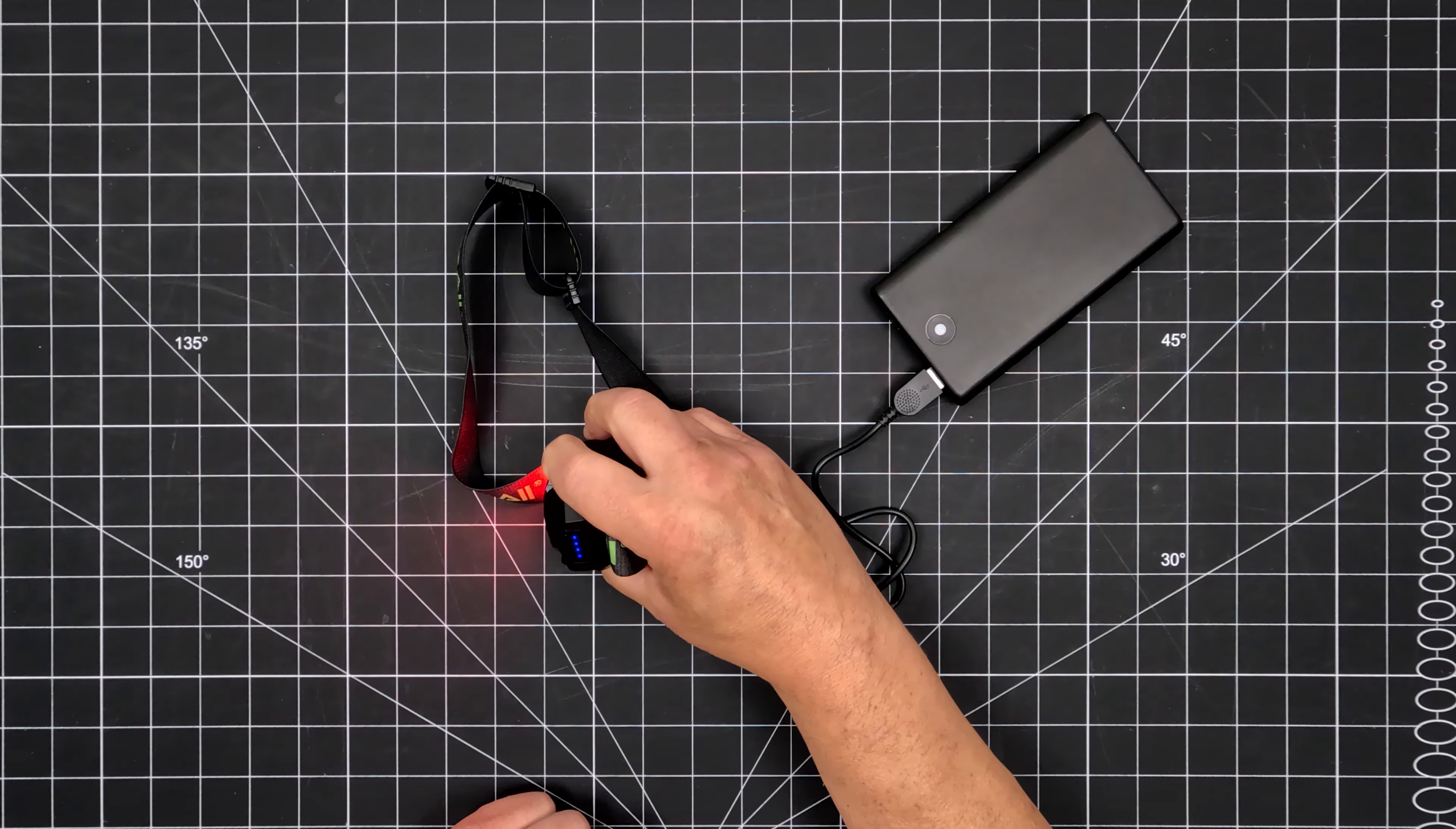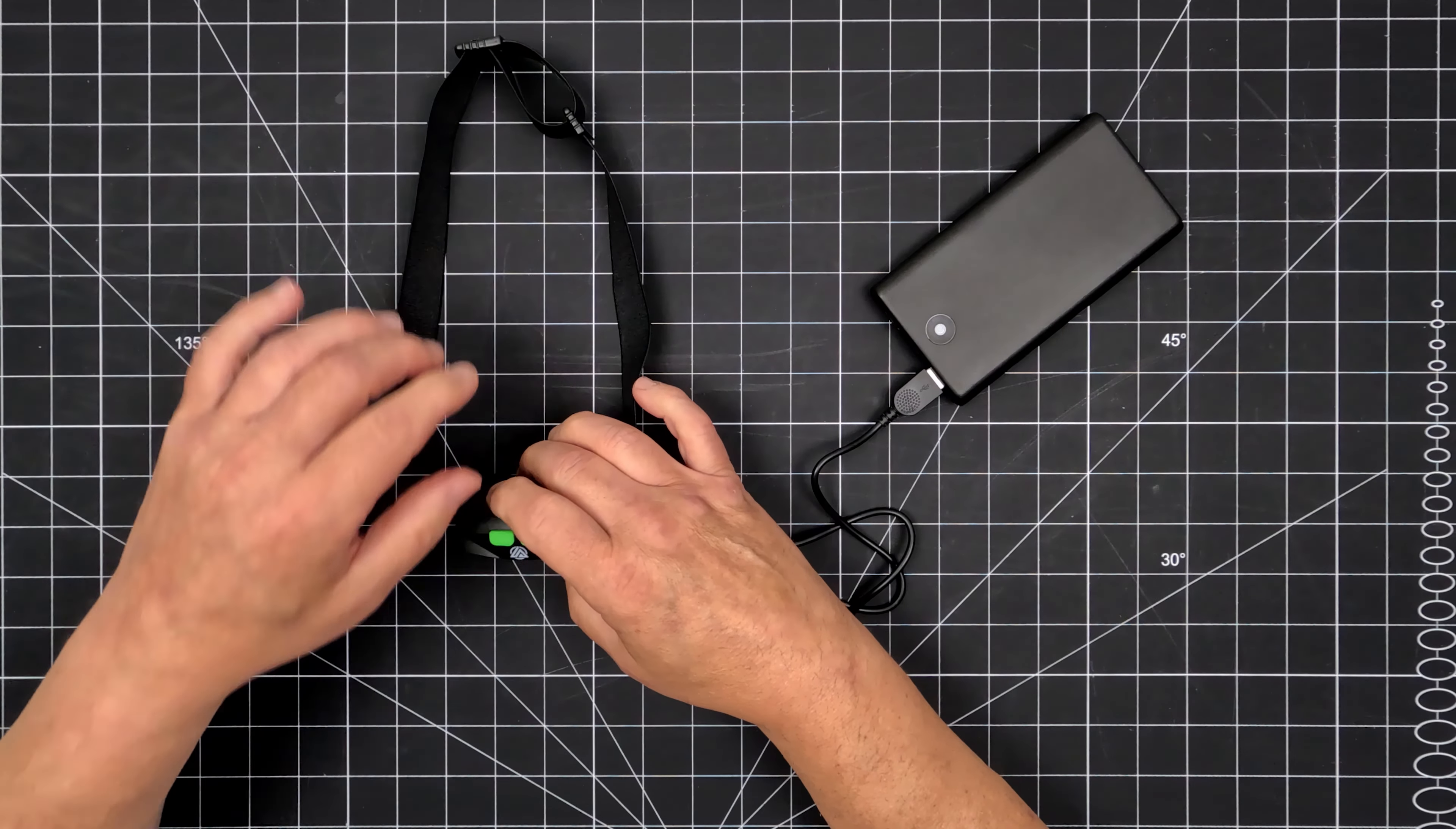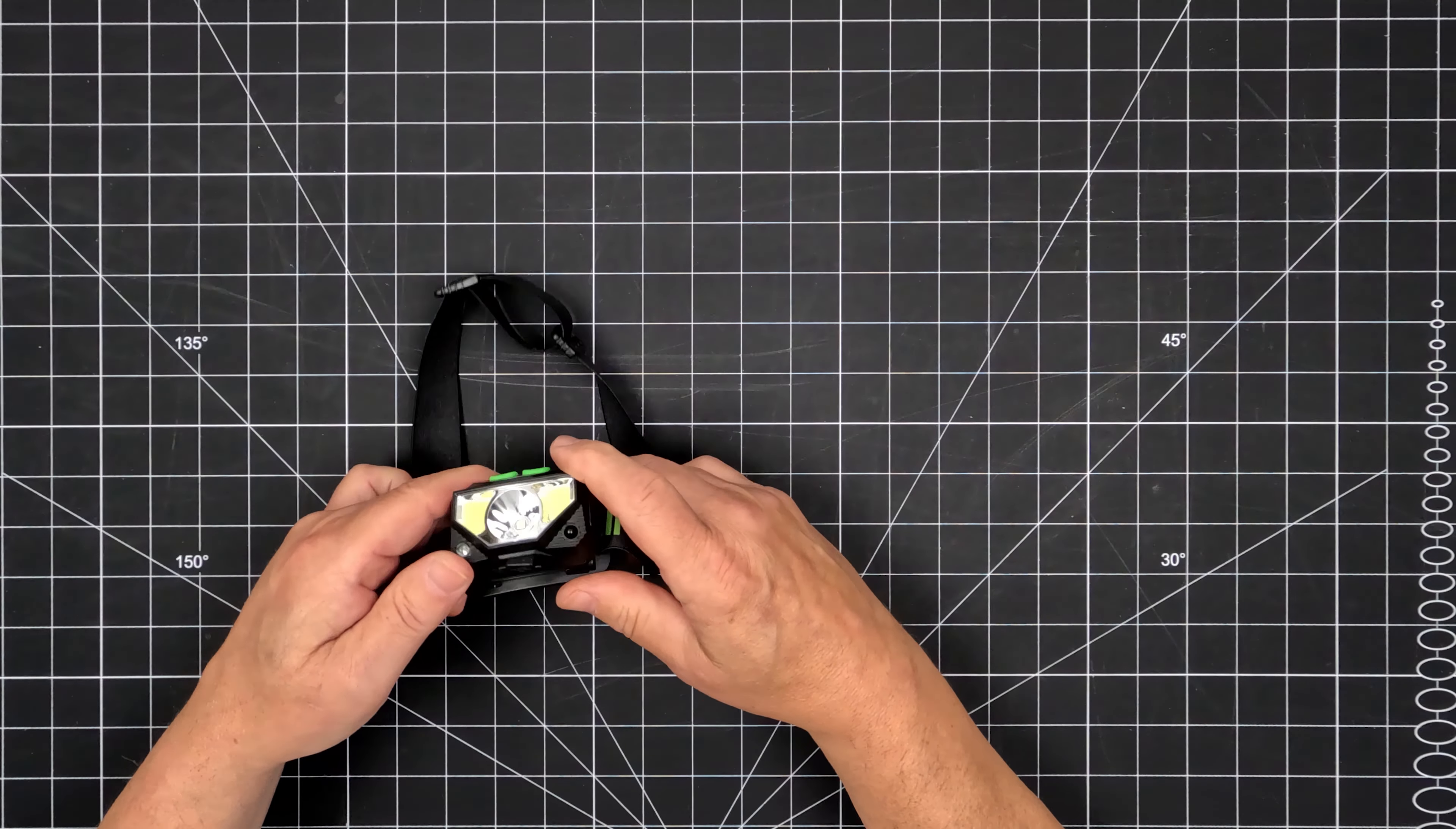A full charge of the non-replaceable 800 mAh 7V battery takes up to 3.5 hours. Next, attach the headlamp to the adjustable headband.